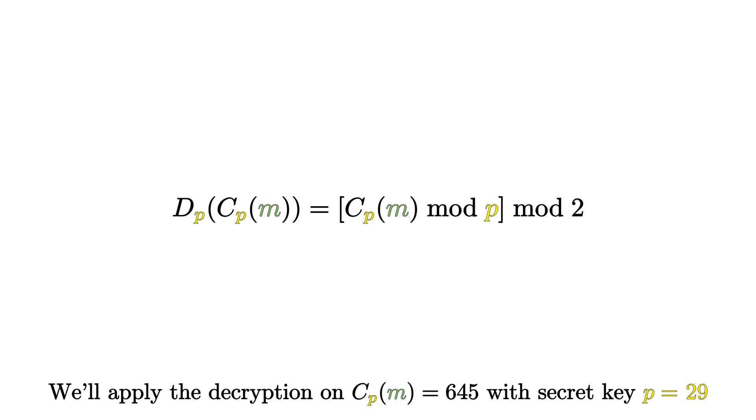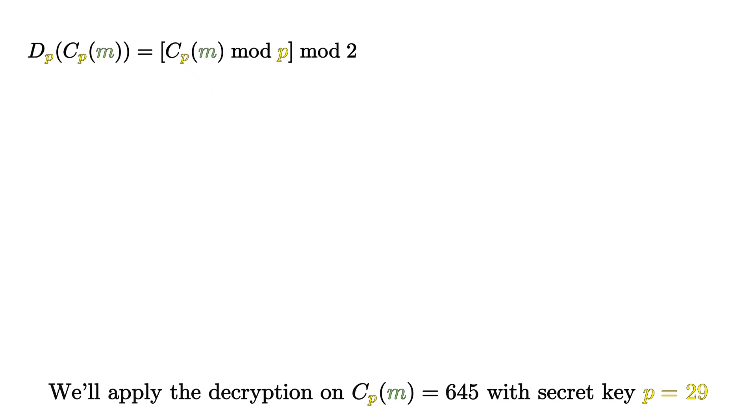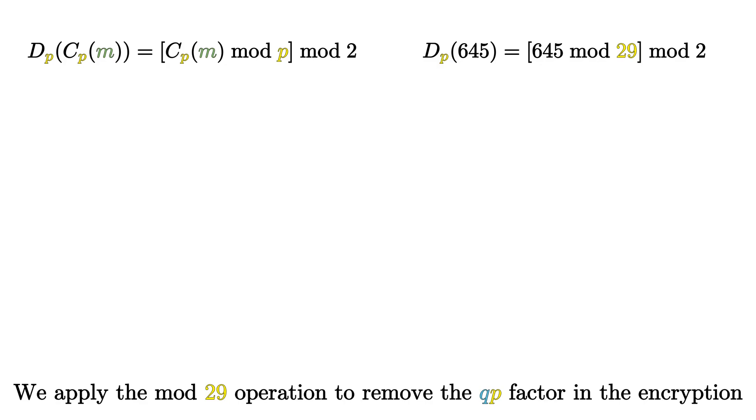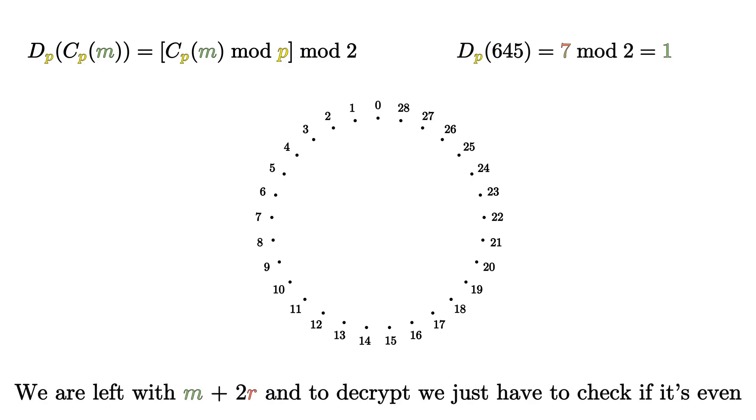So, the decryption is as easy as taking the mod p of the ciphertext and then the mod 2 of the result. The mod p operation removes the qp factor and then we are left with m plus 2r, which is even if m is equal to 0 and odd if it is equal to 1, as simple as that.